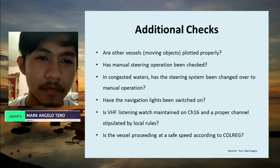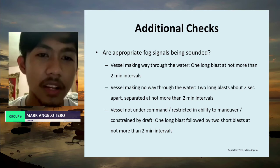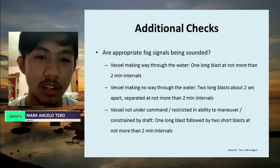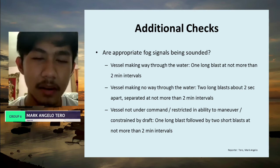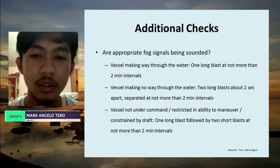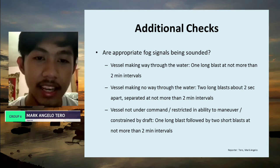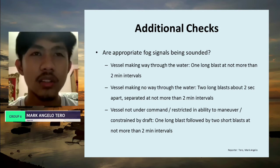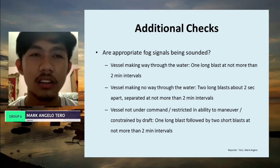Are appropriate fog signals being sounded? For a vessel making way through the water: one long blast at intervals of not more than two minutes. For a vessel making no way through the water: two long blasts about two seconds apart, at intervals of not more than two minutes. For vessels not under command, restricted in ability to maneuver, or constrained by draft: one long blast followed by two short blasts at intervals of not more than two minutes.